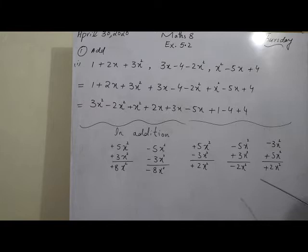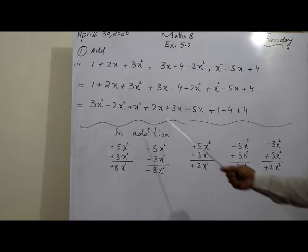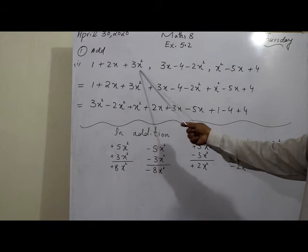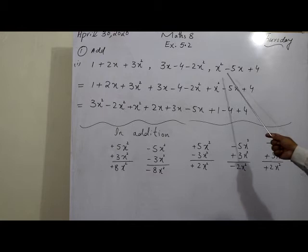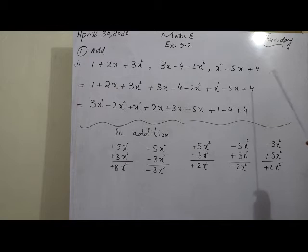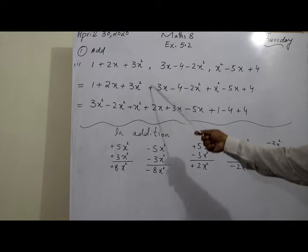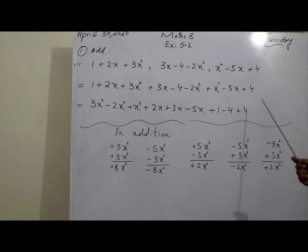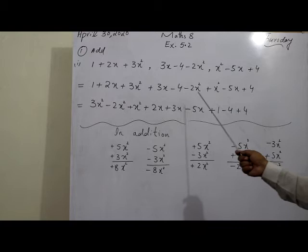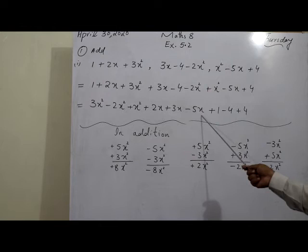Now the first question, part one: we have three expressions to add — (1 + 2x + 3x²), (3x - 4 - 2x²), and (x² - 5x + 4). We can either write them vertically one below another, or remove the commas, place plus signs between them, and rearrange in descending order of exponents. x² is the highest exponent, so we rearrange starting from x² terms.